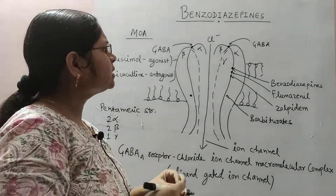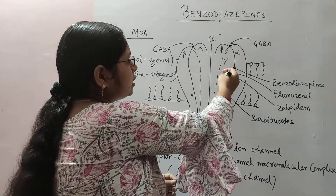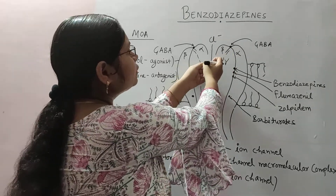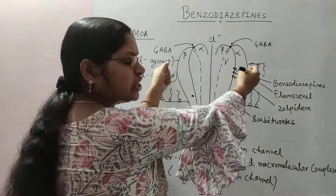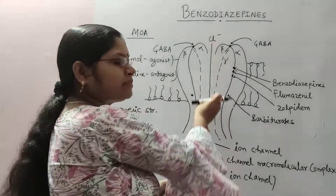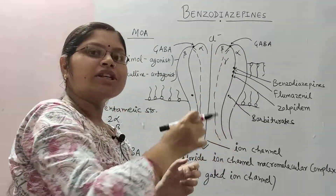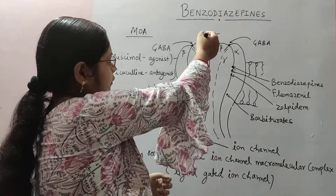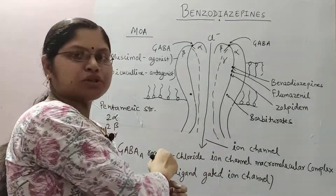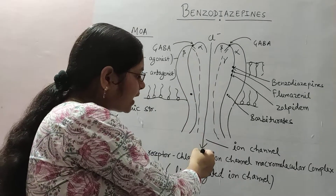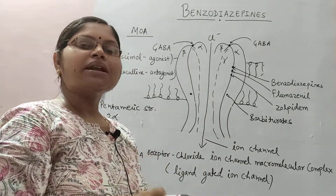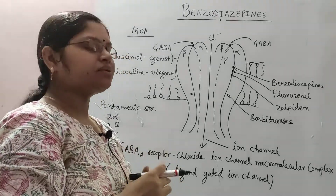When benzodiazepines bind to their site, both alpha subunits stretch away, forming a pore within the receptor. This pore results in an influx of chloride ions, which produces muscle relaxation and CNS depressant activity.